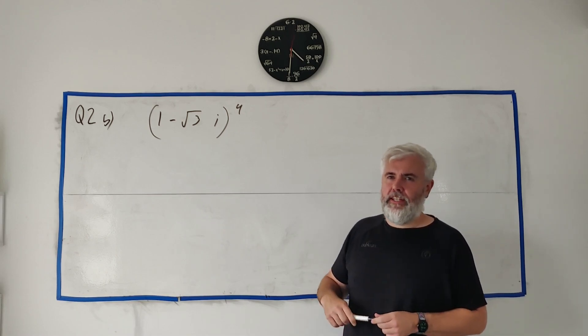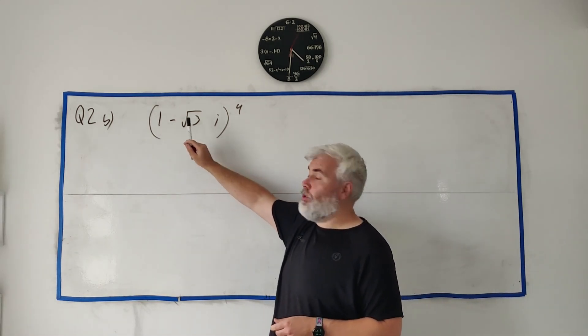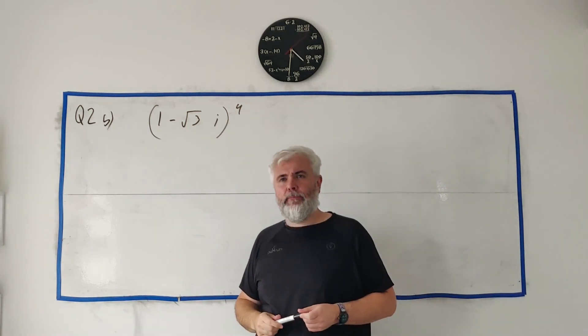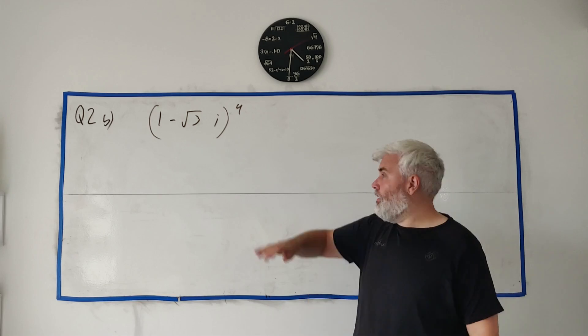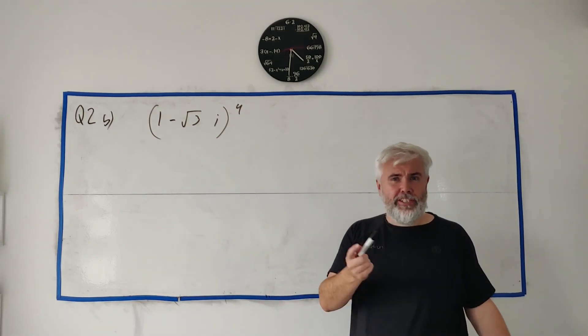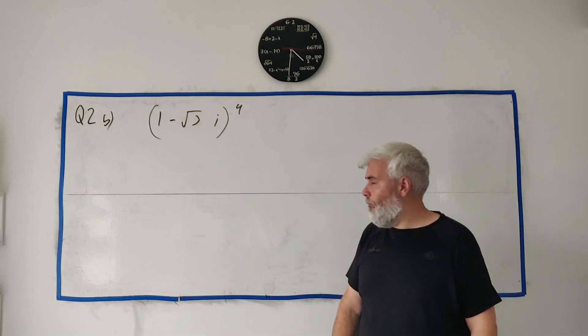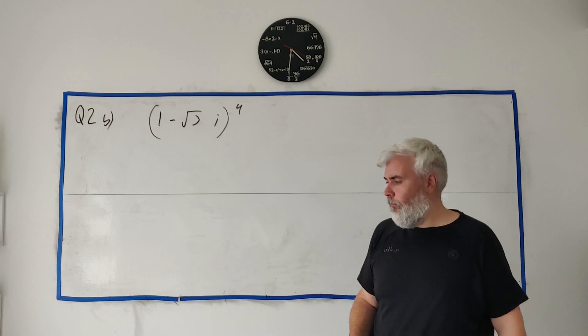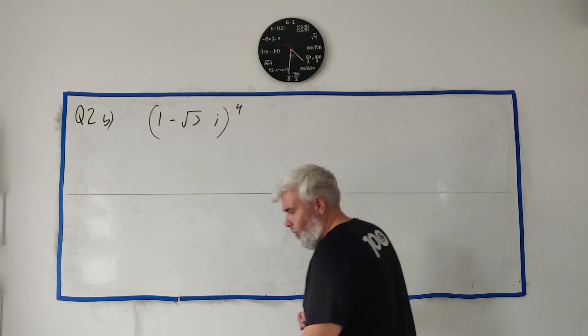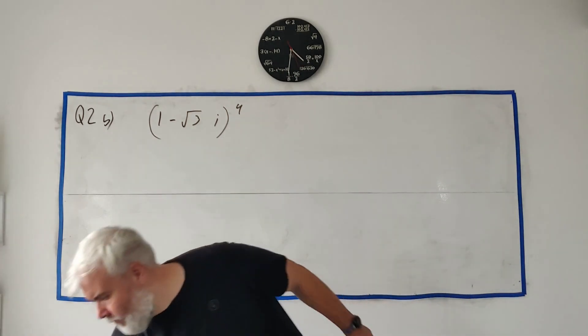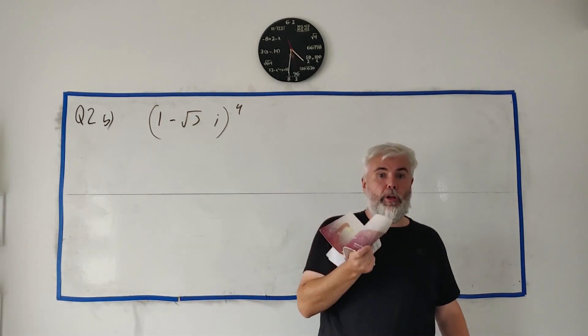Let's move on to part B. In part B, they give us this expression here: 1 minus the square root of 3I all to the power of 9. And basically, they want us to simplify that. They want us to write this as just A plus BI. And they give us a hint, though. They say use De Moivre's Theorem.